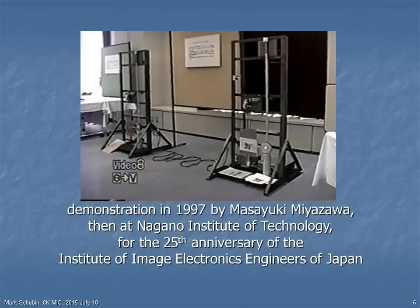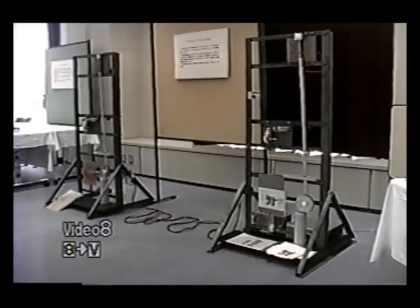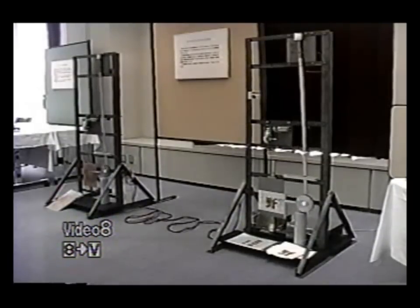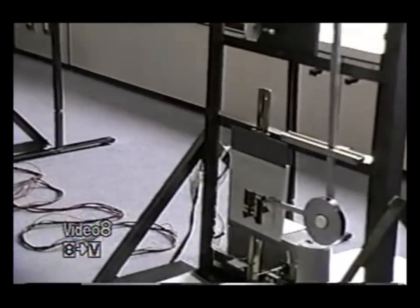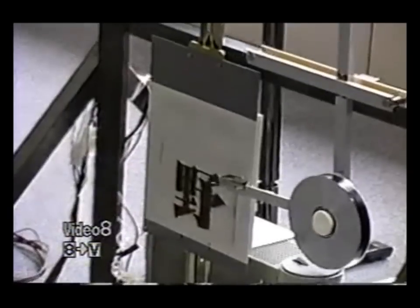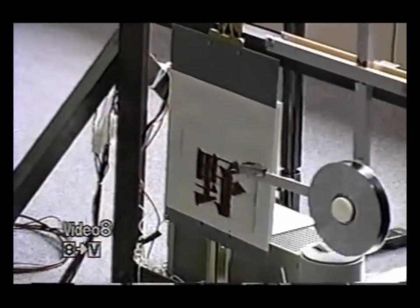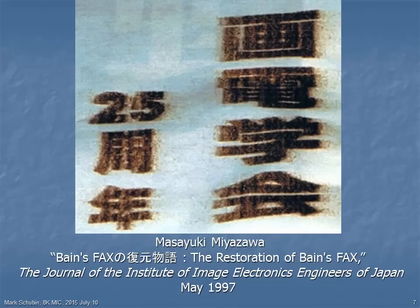For the 25th anniversary of the Institute of Image Electronics Engineers of Japan in 1997, Masayuki Miyazawa, then of Nagano Institute of Technology, built a pair of Bain fax machines according to the 1843 patent, and they worked quite well. You can see them operating here, with synchronized scanning of the transmitter and receiver and individual scanning lines. Zooming in, you can see the image of the character being scanned. Here's an image transmitted by the 1843 copying telegraph in 1997.